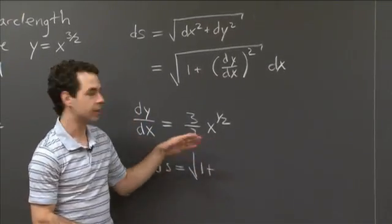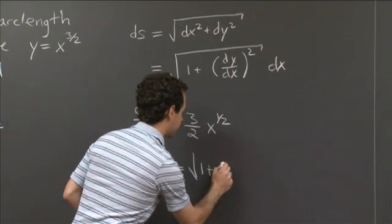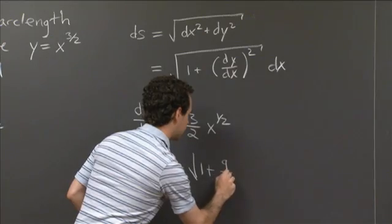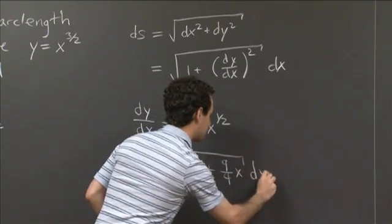so now you have to square this. Well, 3 halves squared is just 9 quarters, and the square root of x squared is x. So this is 9 fourths x dx.